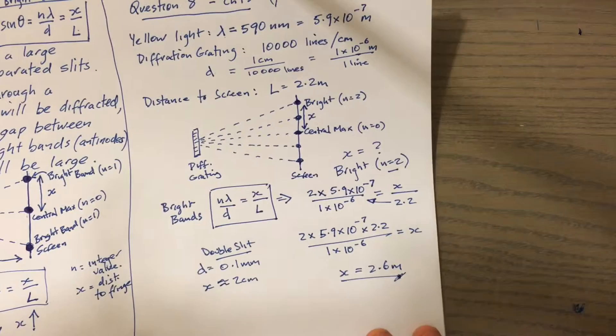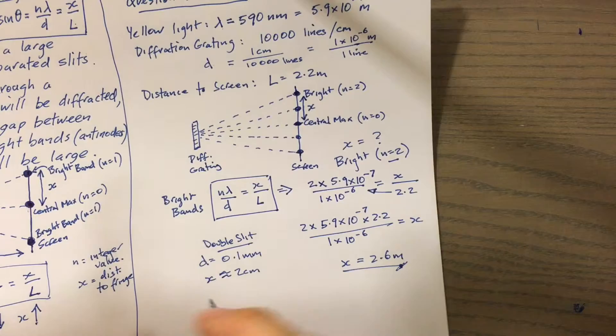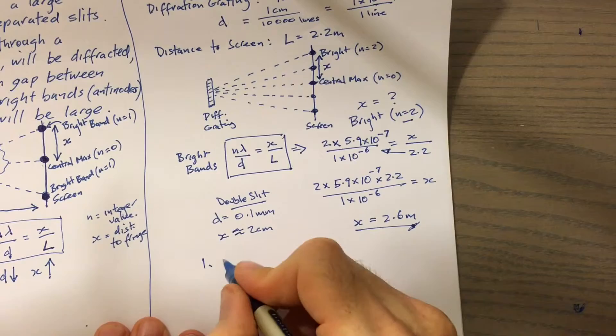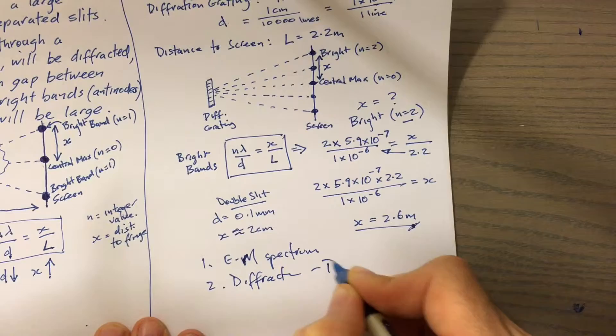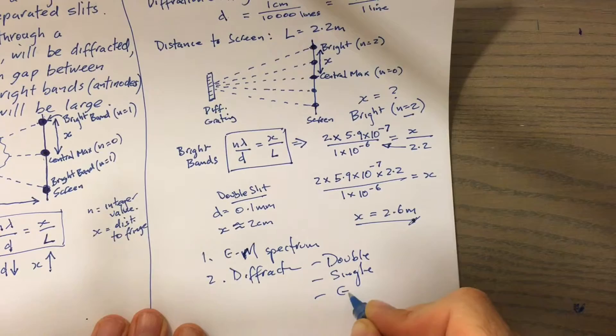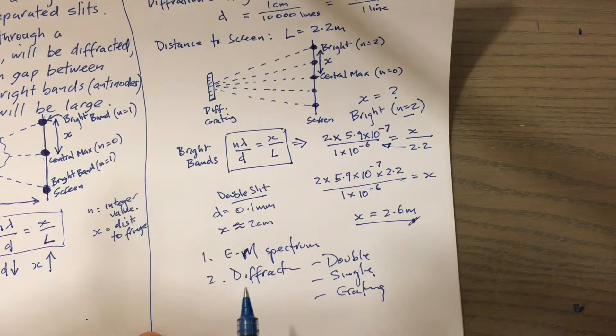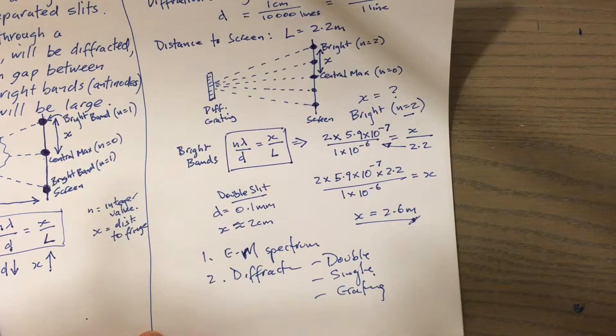So I'll leave that at that. To summarize, chapter 15 we looked at the electromagnetic spectrum, and we've looked at diffraction in terms of double slit, single slit, and now the gratings as well. There's some other interesting ideas that sit in chapter 15, things like polarization of light, diffraction in films and soap bubbles and CDs as well. We'll just leave it at that though for now, thank you.